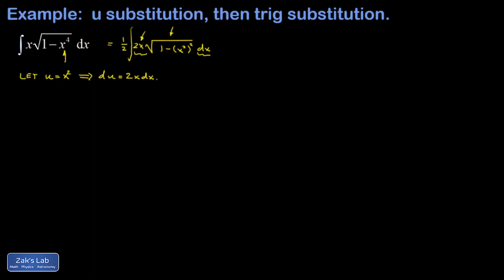Of course you can't just go around multiplying things by 2, so I make up for it out in front by putting a one-half. Now I transform my integral in terms of u. I have 1 minus u-squared inside that square root, and I recognize this as a trig substitution type integral.